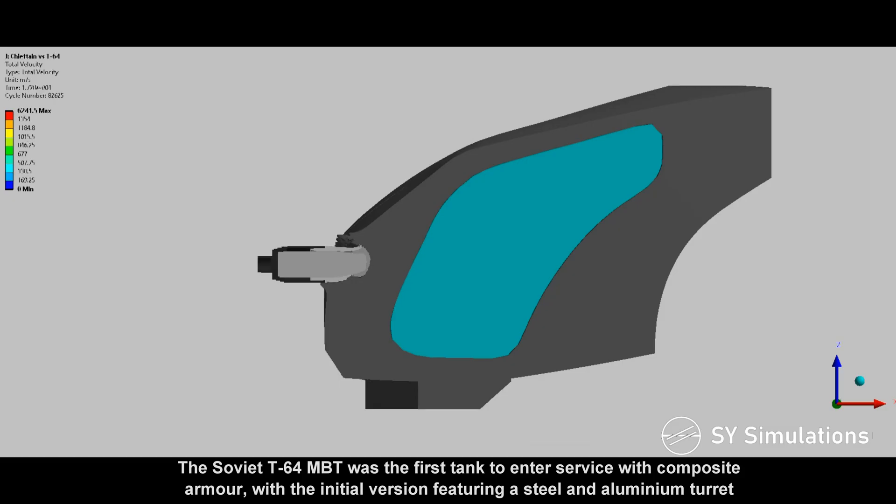The Soviet T-64 main battle tank was the first tank to enter service with composite armor, with the initial version featuring a steel and aluminum turret.